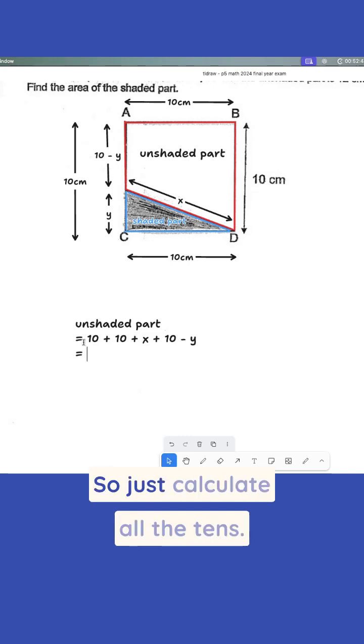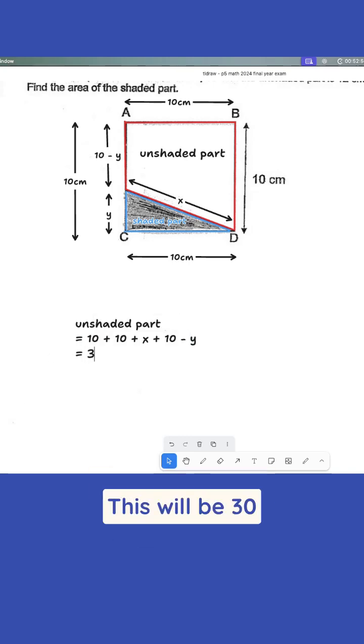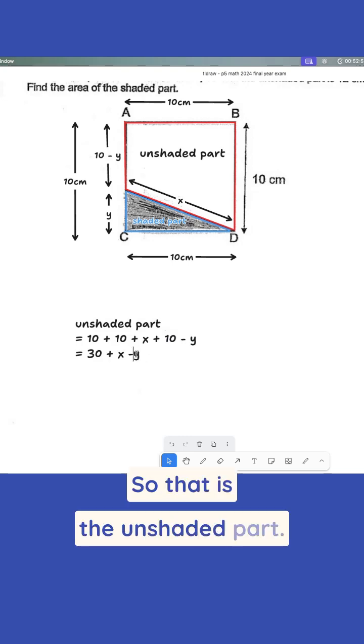And then this will just be, so just calculate all the 10s. This will be 30 plus X minus Y. So that is the unshaded part.